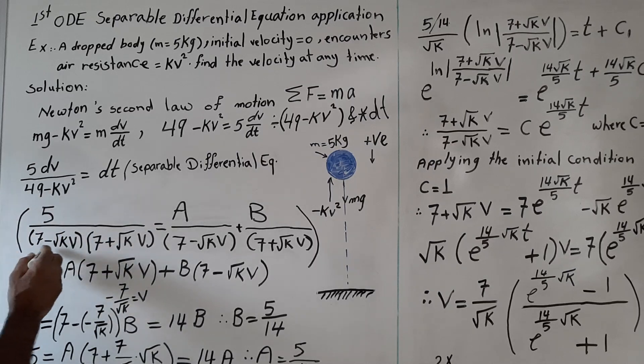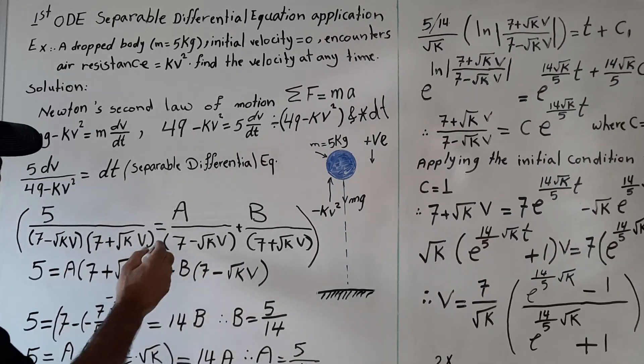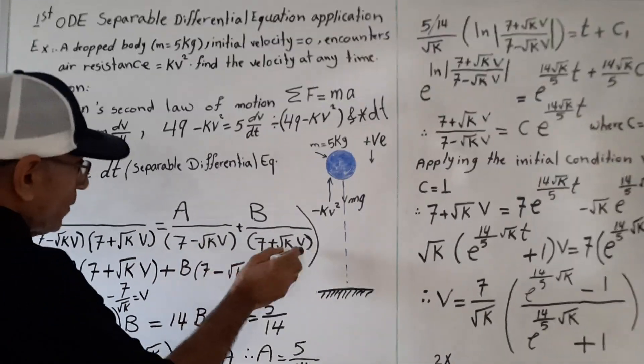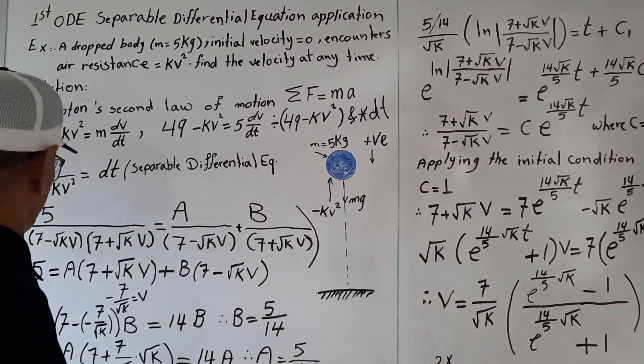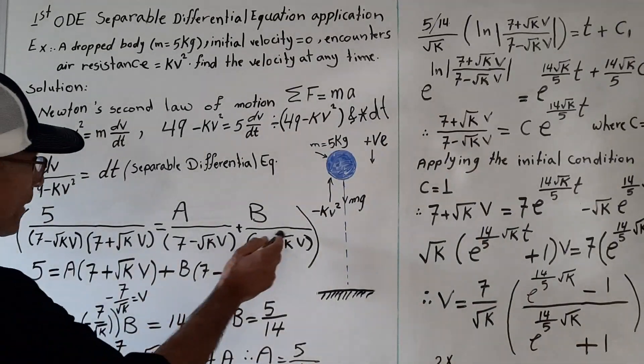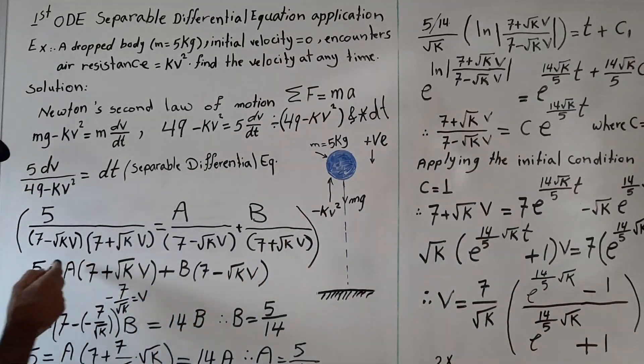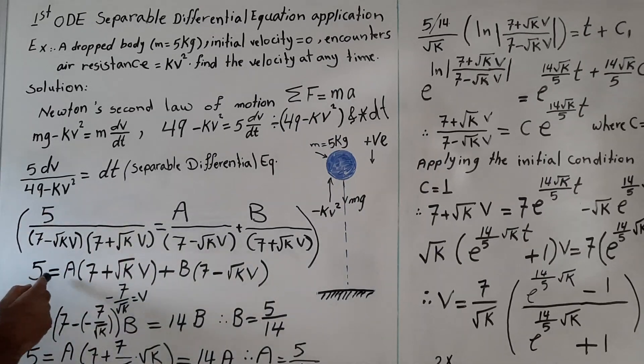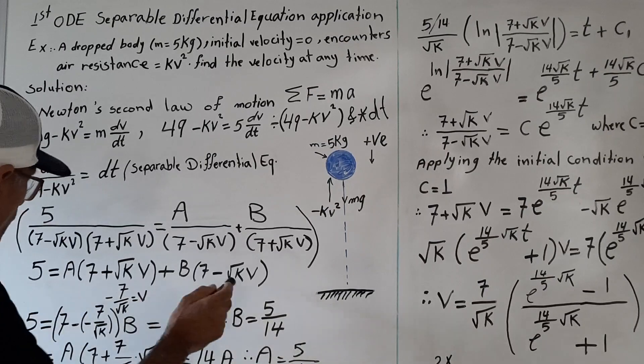So here we factor this value and we put A over 7 minus root square of k times v, plus B over 7 plus root square of k times v. We multiply this equation by these two parentheses, so we got 5 equals A times this expression.